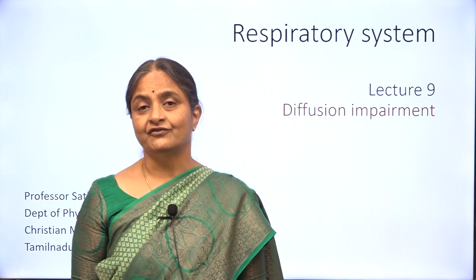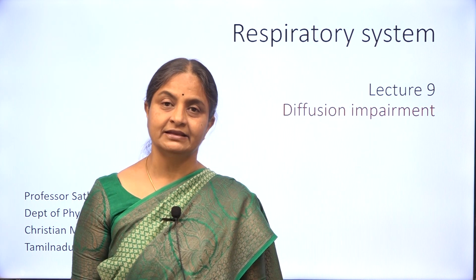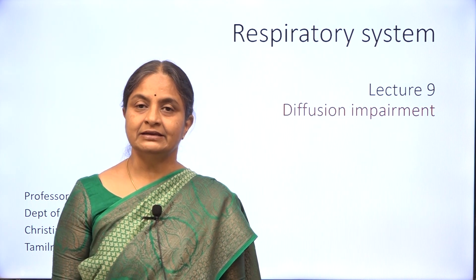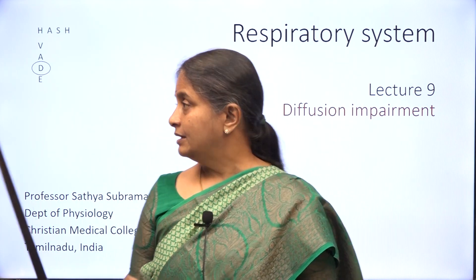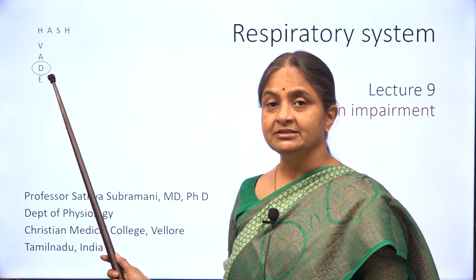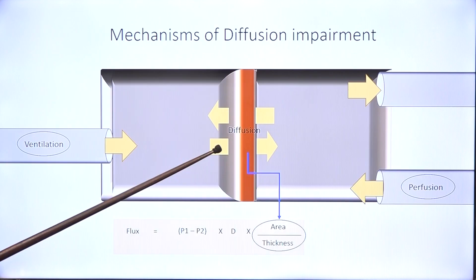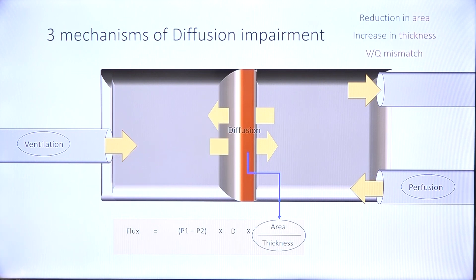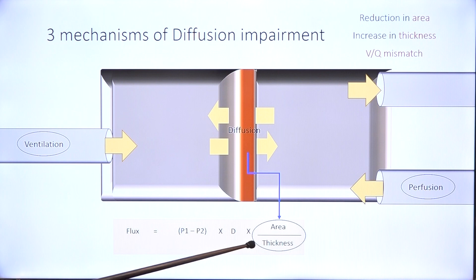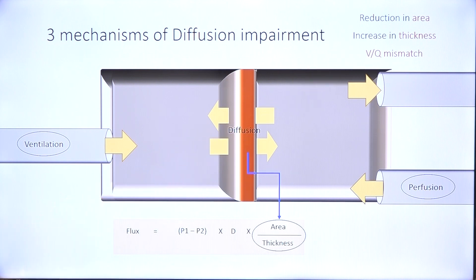Having discussed diffusion of oxygen and carbon dioxide in the lung in the previous two lectures, it is the right time for us to learn about mechanisms of diffusion impairment, the phenomenon which appears as the D in our mnemonic. Diffusion of oxygen occurs from the alveolus to the capillary and carbon dioxide in the reverse direction. The mechanisms of diffusion impairment involve reduction in surface area, increase in thickness of the respiratory membrane, and another phenomenon called VQ mismatch which we will discuss in the next lecture.